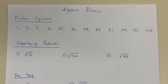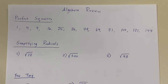Perfect squares. The most common perfect squares are 1, 4, 9, 16, 25, 36, 49, 64, 81, 100, 121, and 144. These are perfect squares because we can take the square root of each of these numbers and get a whole number in return.